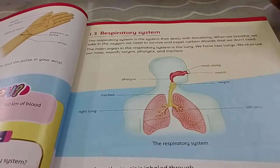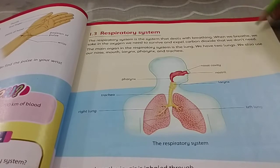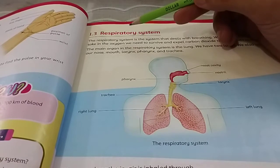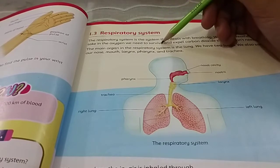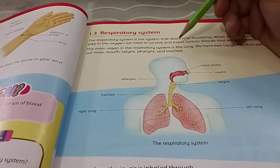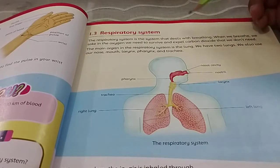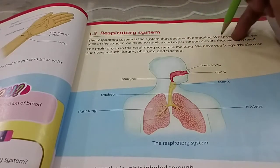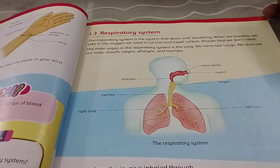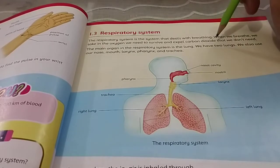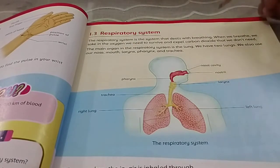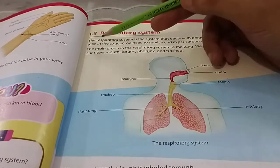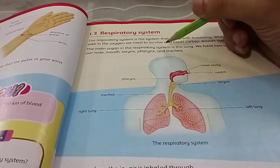When we breathe, we take in oxygen — we need oxygen to survive. We breathe in oxygen and expel, or take out, carbon dioxide, which we don't need. Plants, however, need carbon dioxide and give us oxygen in return. The main organ in the respiratory system is the lung.